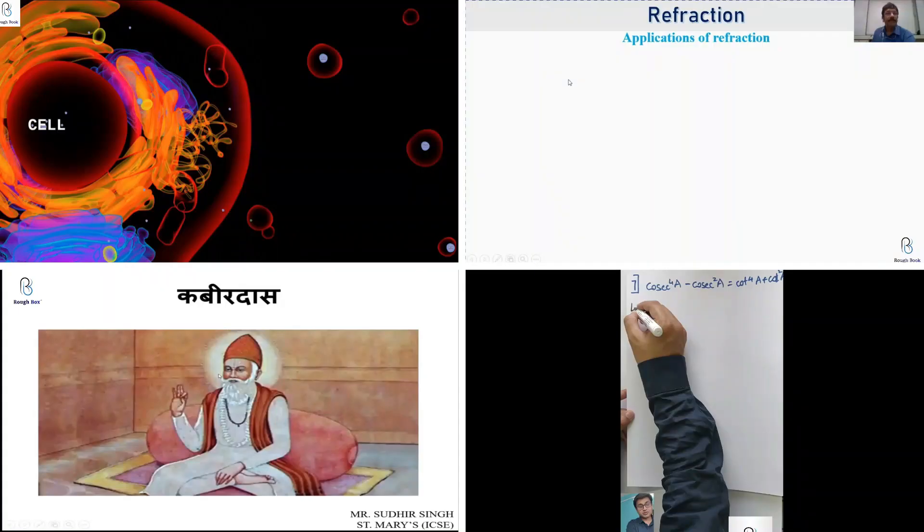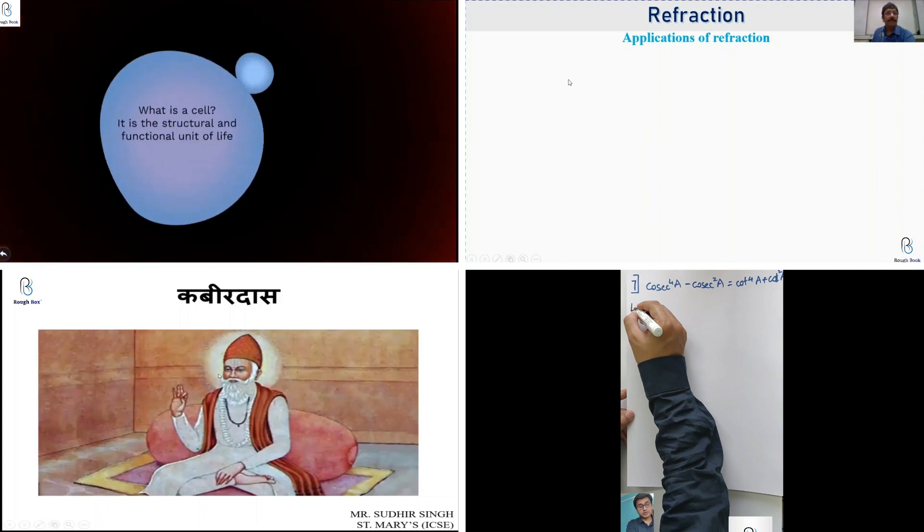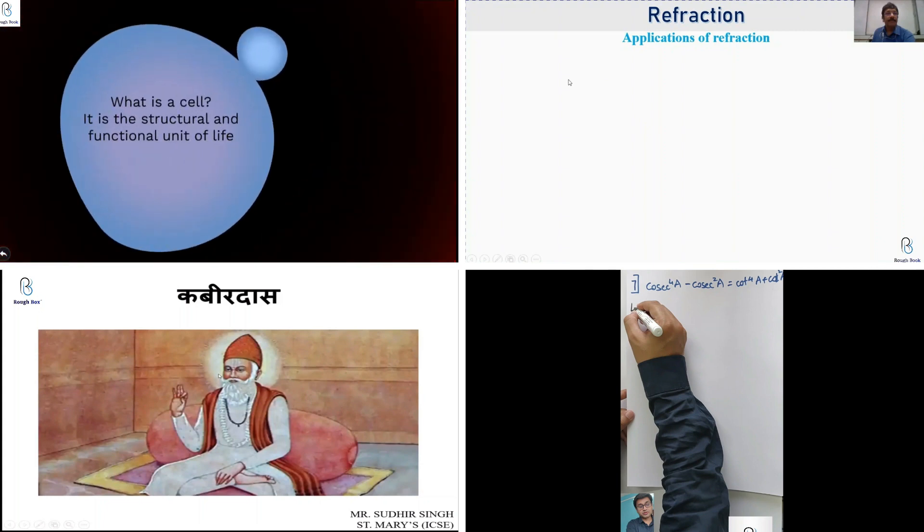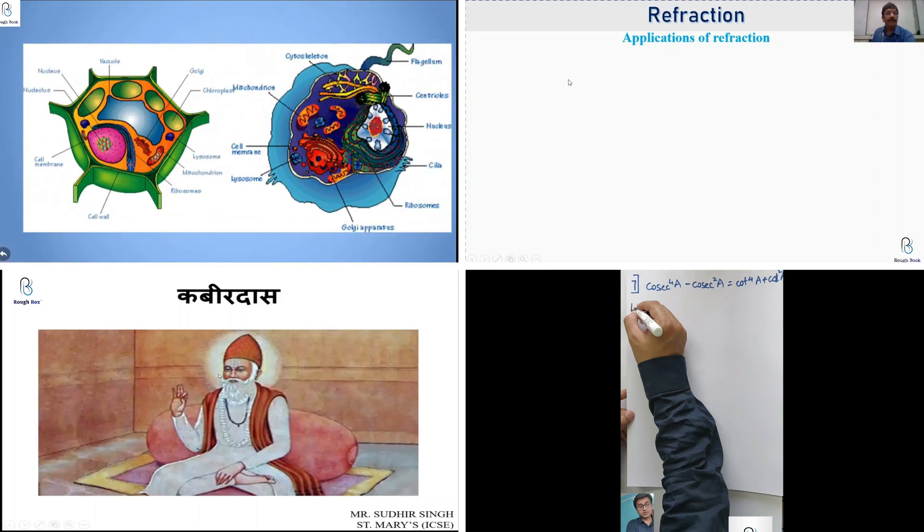Let us study about the most important component in a body, the cell. What is a cell? Cell is a structural and functional unit of life. And why do I say that? Over the years, we have seen these two structures, the plant cell and the animal cell.